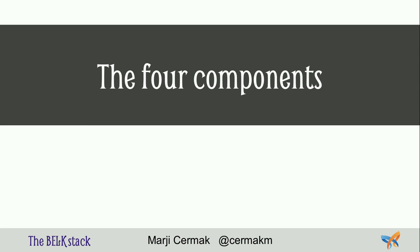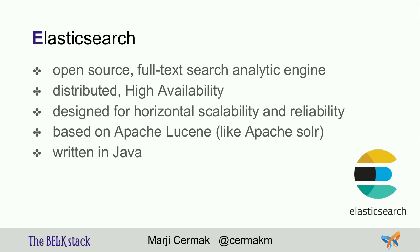The stack has four components. Elasticsearch is where the data is stored — it's a full-text search and analytics engine. You might be familiar with Apache Solr; they actually share the same codebase, both forked from Apache Lucene. But Elasticsearch has built-in high availability and horizontal scalability. You can have a cluster of nodes, and if you run out of space, just add another Elasticsearch node — it automatically joins the cluster and rebalances the data.